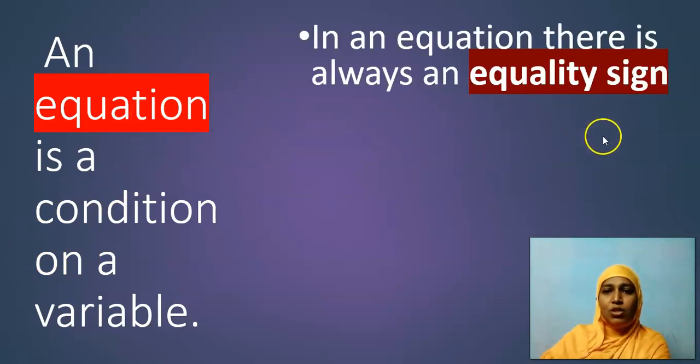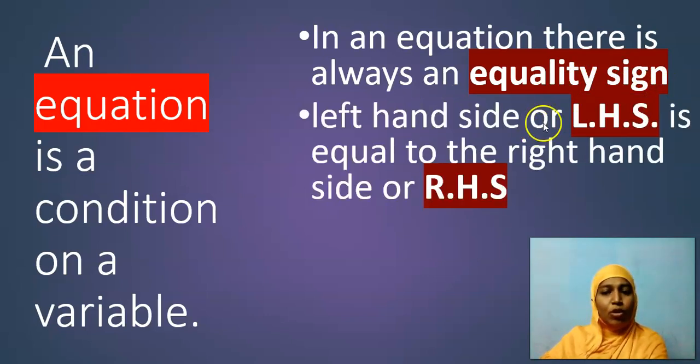It means I am posing a condition to that variable. So it becomes an equation. When I pose a condition on a variable, it becomes an equation. In an equation, it is a must to have an equality sign. Because of that, we have LHS, left hand side and right hand side.